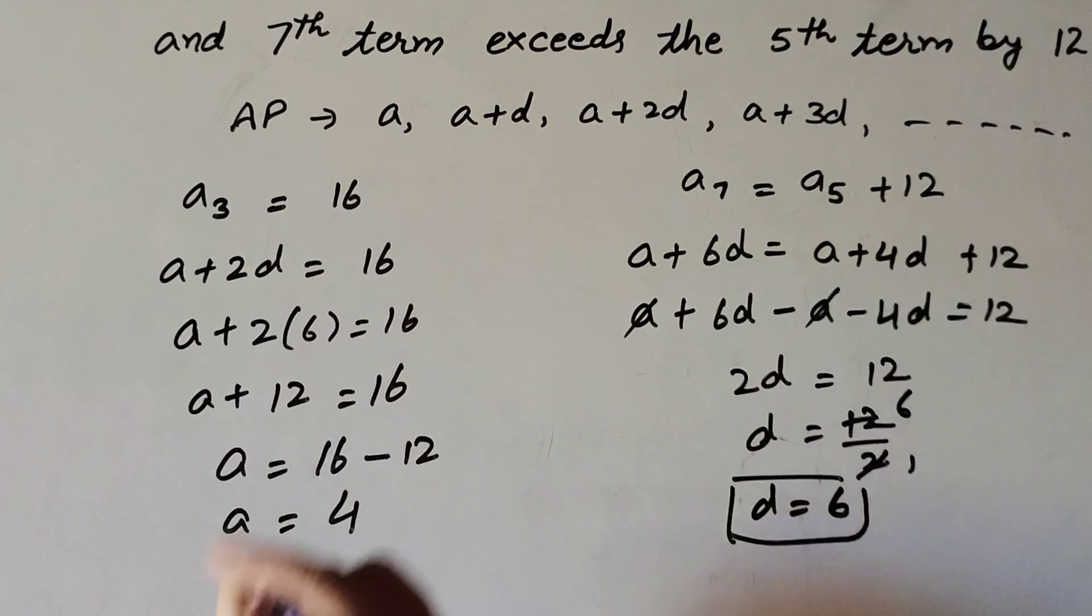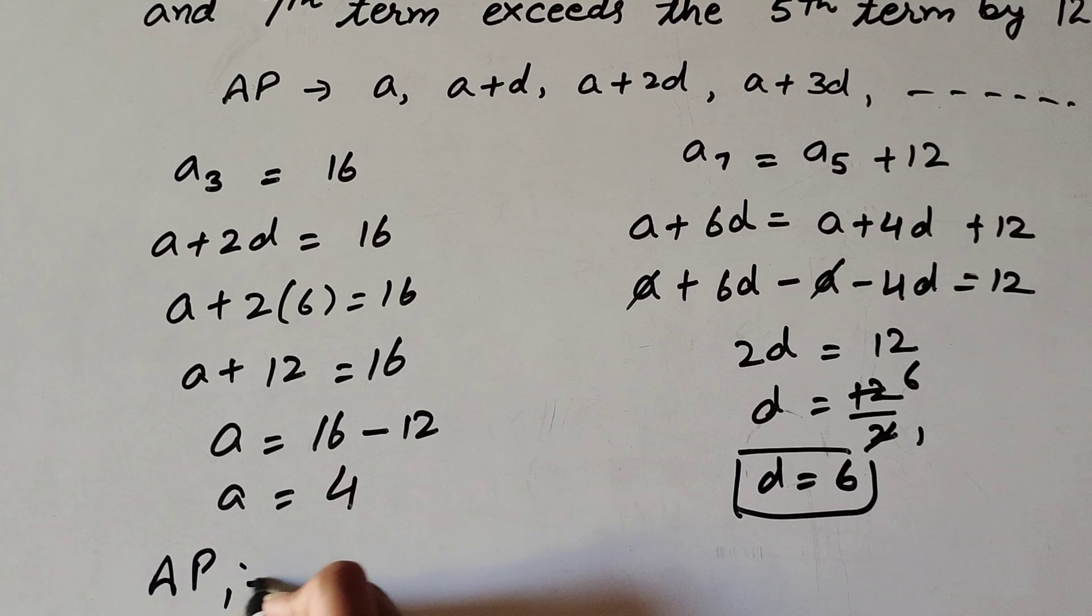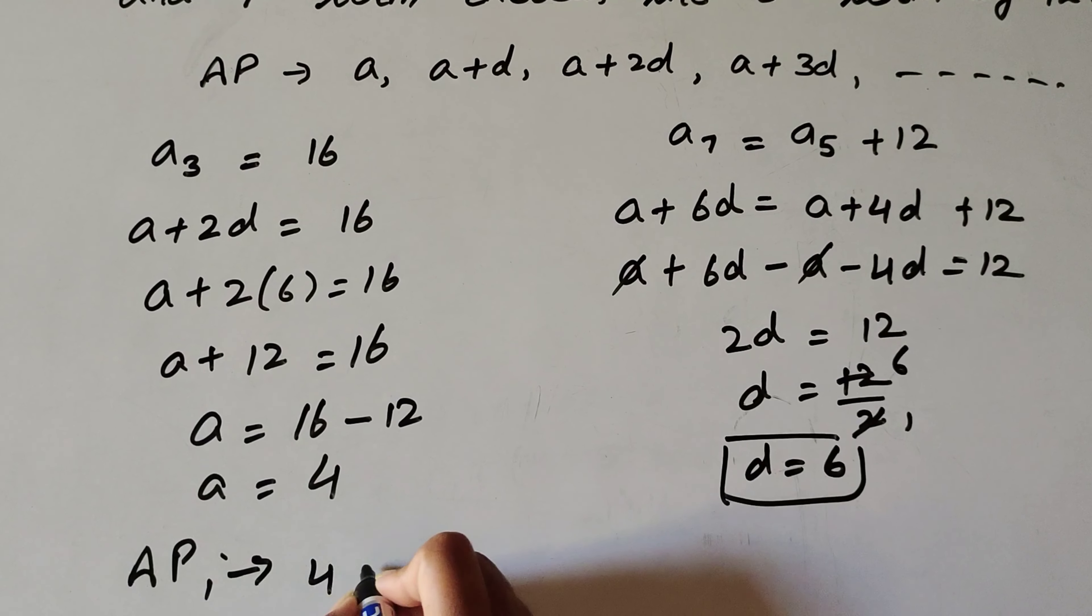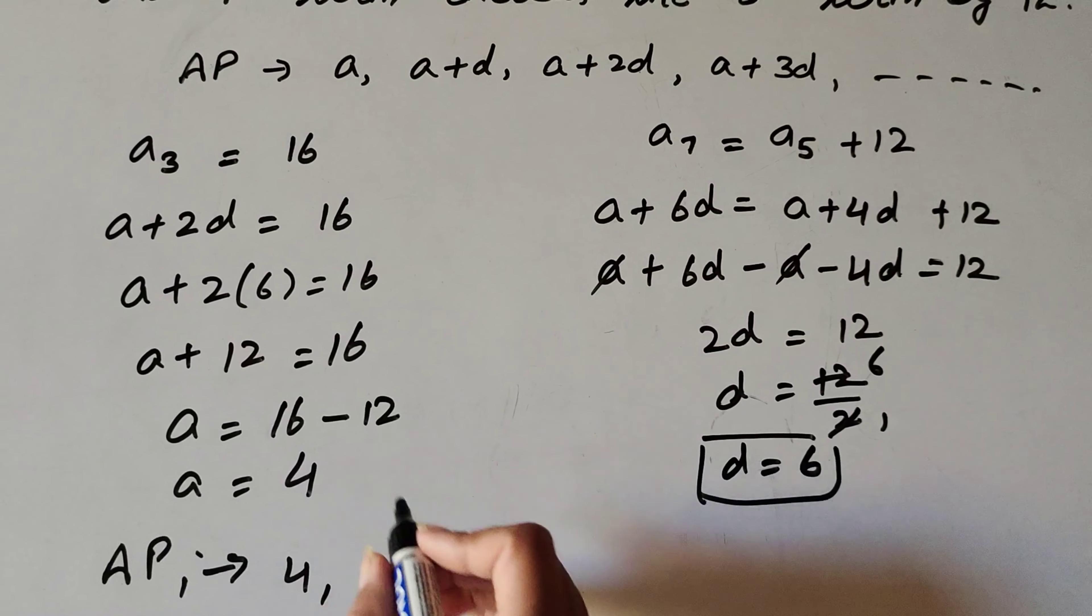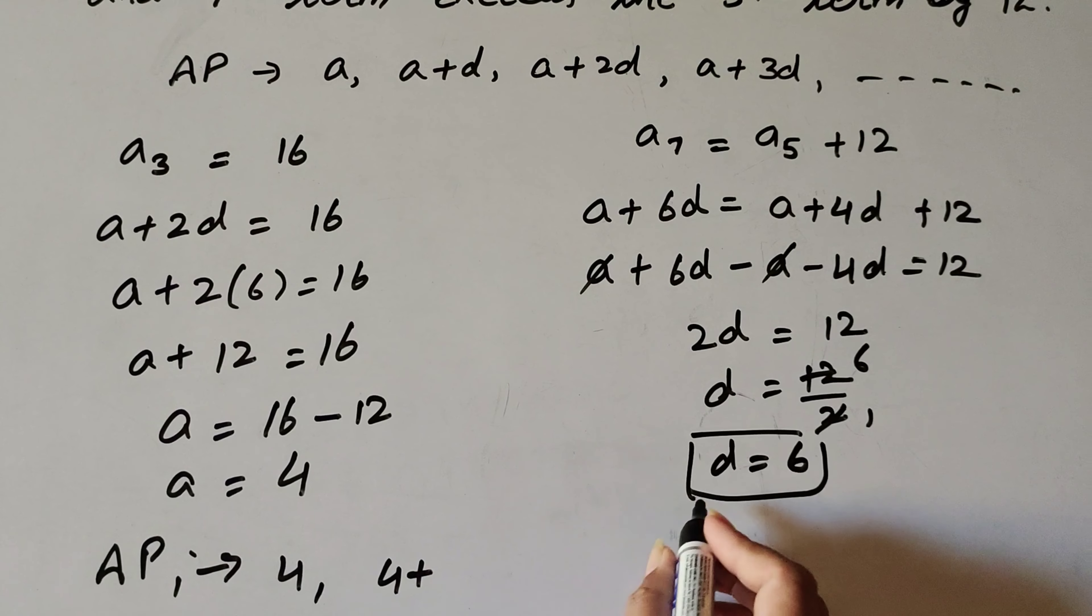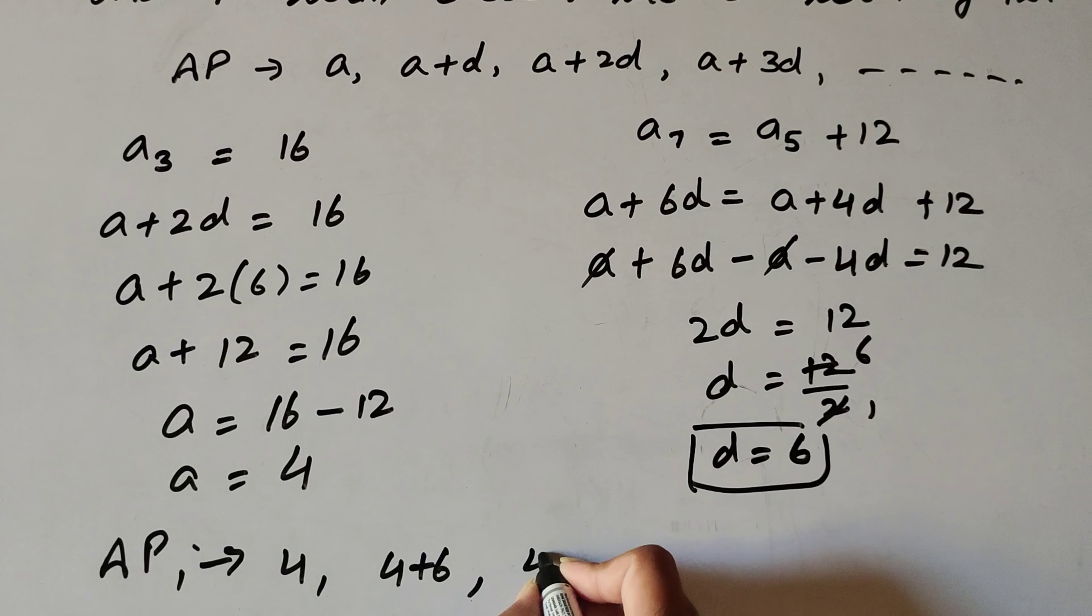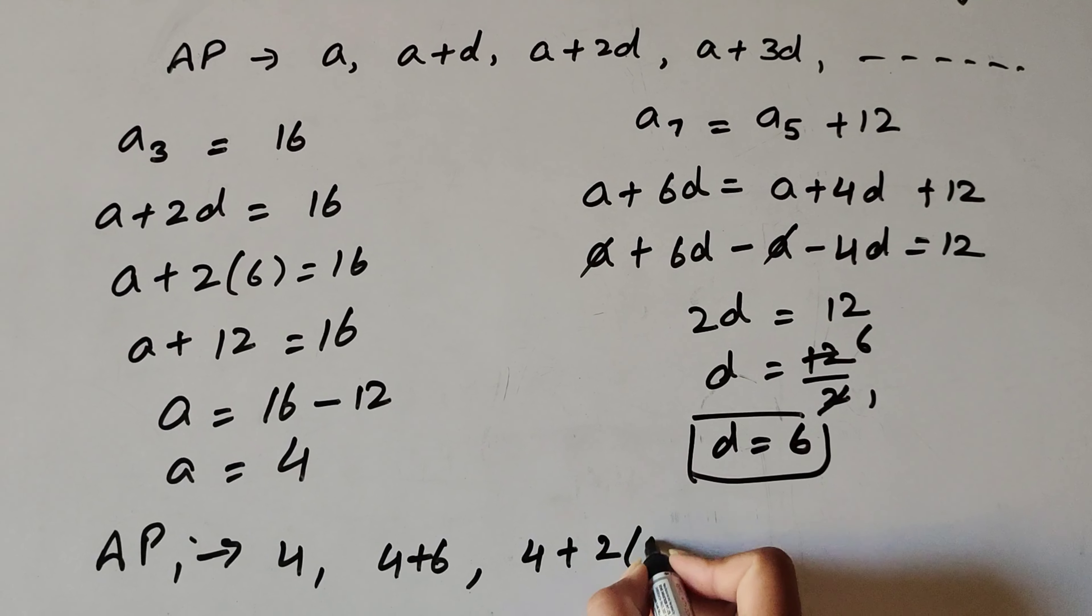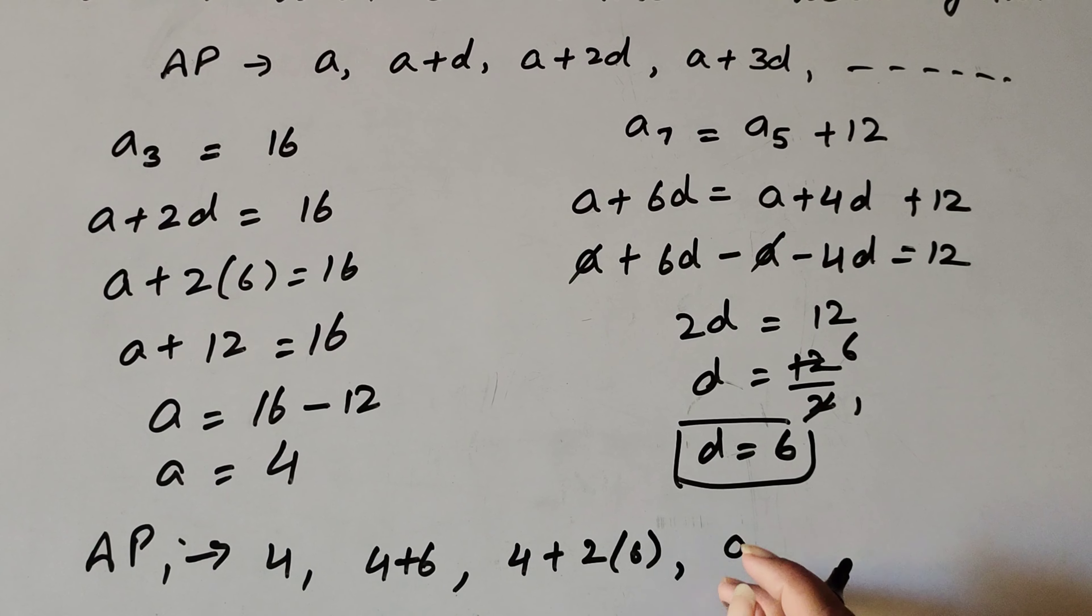So now we find the AP series. First term a is 4. Second term a plus d is 4 plus 6. Third term a plus 2d is 4 plus 2 times 6. Fourth term a plus 3d, and so on.